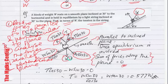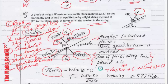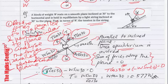Taking going upwards as positive: T cos 30 is going upwards, and W sin 30 is going downwards. So we write T cos 30 minus W sin 30 equals 0. There are no more forces parallel to the plane. So we have T cos 30 minus W sin 30 = 0.